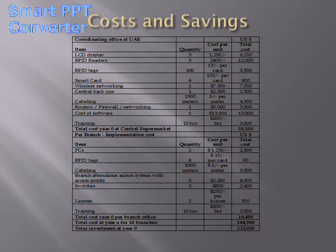Now let's see the cost and benefits of implementing the new system. For calculation purposes, I have taken the cost of the main supermarket separately and the cost of setting up the system in other branch locations separately; the final cost is the sum of both. The overall cost of setting up the new system in the main branch is US$58,150. The cost is comparatively less in other branches since they are small outlets — US$16,490 per branch — so the total cost for 10 branches is US$164,990. Accordingly, the total investment in year zero for this project is US$223,050.